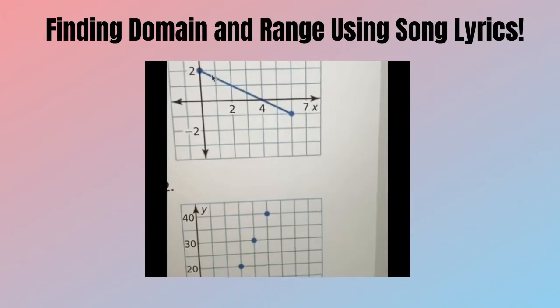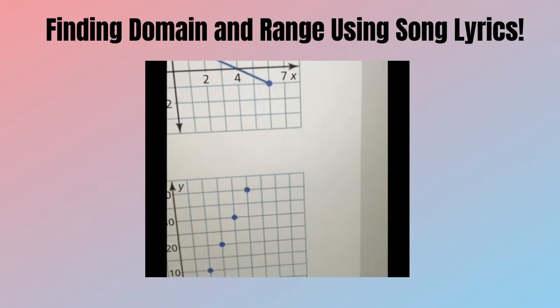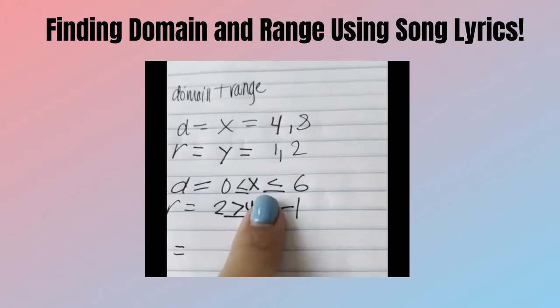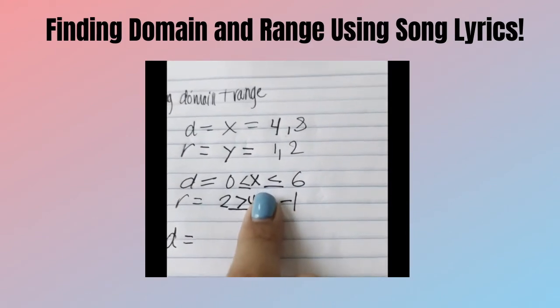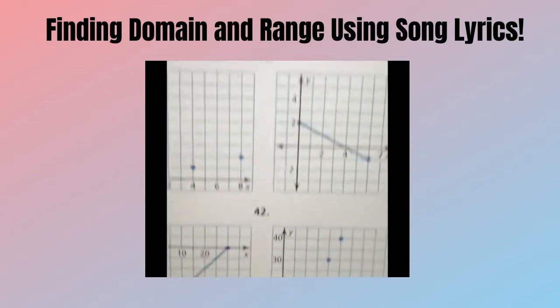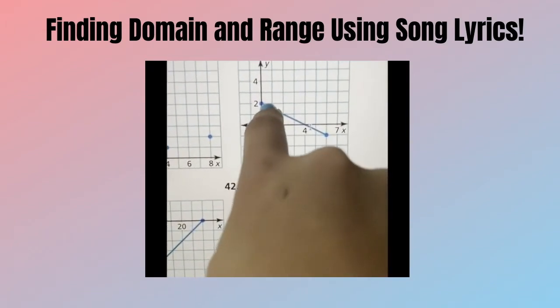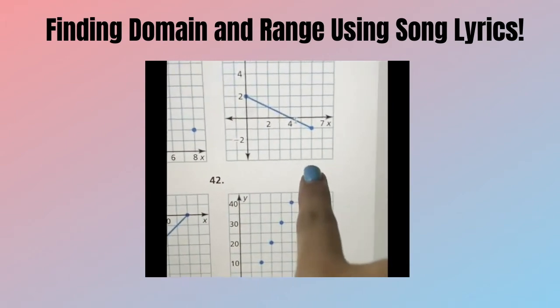The leftmost points and the rightmost points are the endpoints of the domain. The highest and lowest points on the graph are the endpoints of the range.